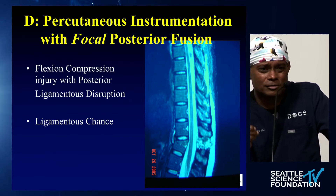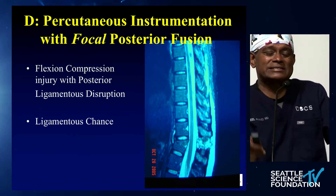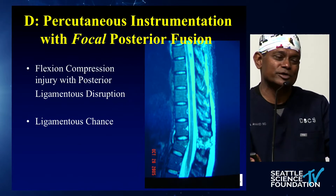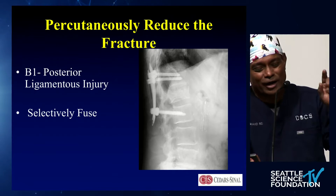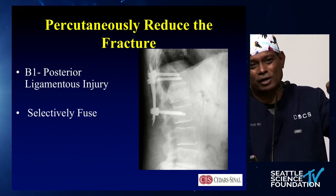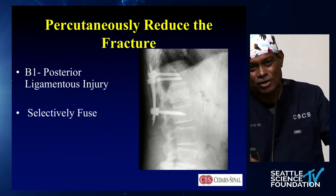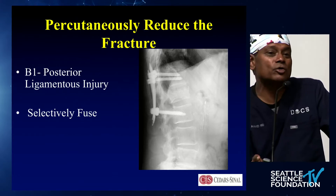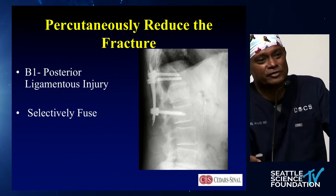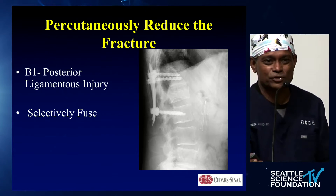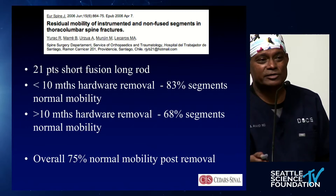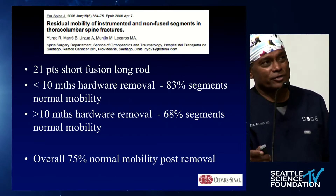Take the same patient now with a flexion-distraction injury, but now with a ligament injury in the back — this is a different animal. It's not a bony injury; it's a ligamentous injury in the back, and that segment needs to be fused. If it's a monosegmental ligament disruption in the back, fuse that segment. You don't need to do L1–L2; you're saving yourself another level. Put it in, let it fuse, let it heal. A year later, take the hardware out — you did a monosegmental fusion and got away with it.